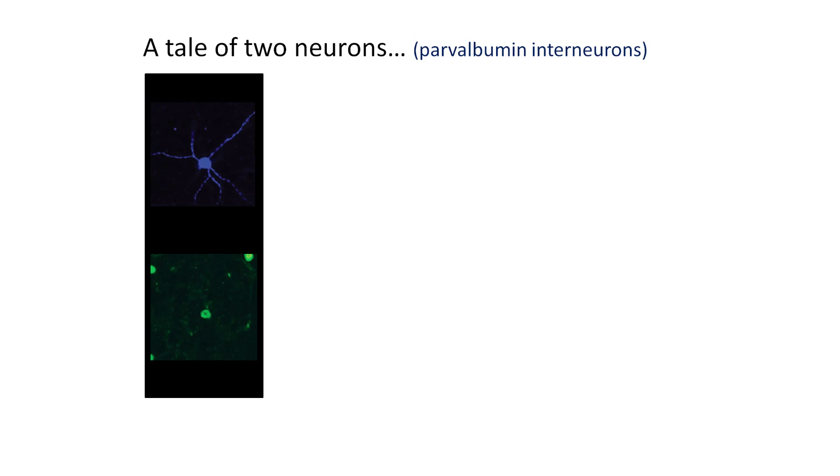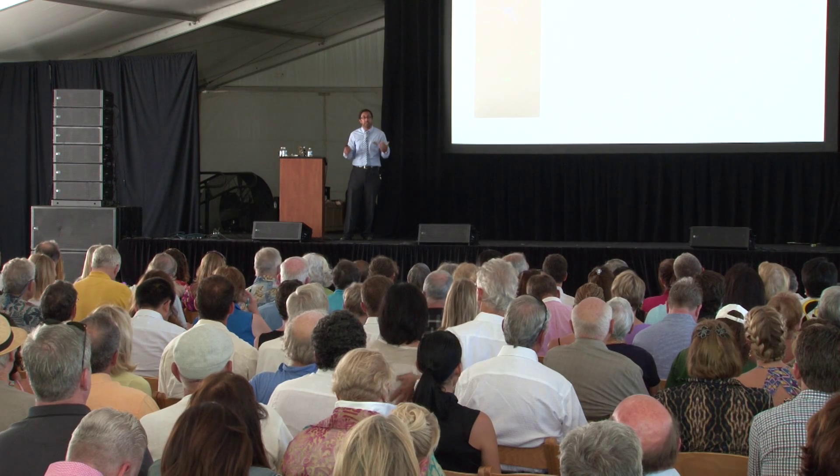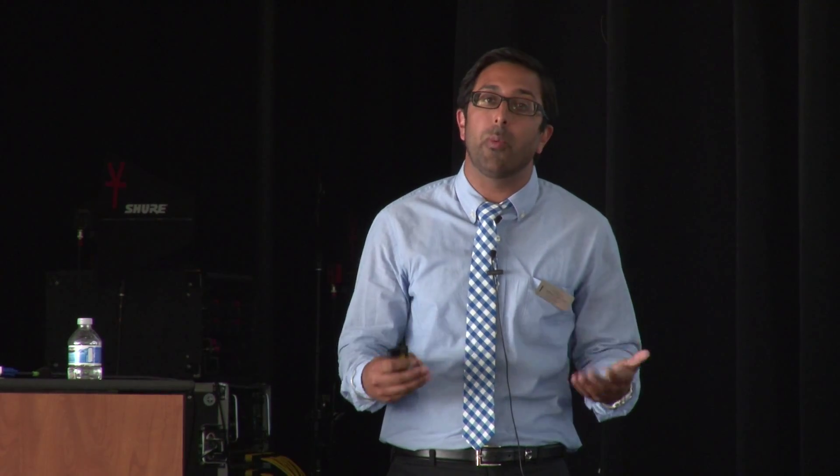I'm going to tell you about two projects today and build up to the one that Dr. Hyman just told you about. First, I'm going to tell you about some work in mice looking at a particular group of cells that we think are important in schizophrenia. We know our brain is made up of neurons that talk to each other — some excite other neurons, others inhibit them. There's a particular group of inhibitory neurons called parvalbumin interneurons that are especially important in schizophrenia; they seem to be abnormal in that disease.